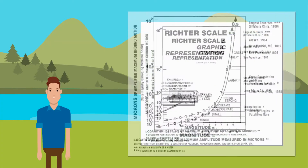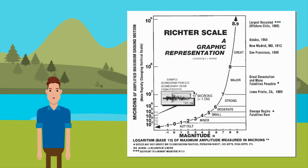The effect of an earthquake can be measured on the Richter or Mercalli scales. The Richter scale measures the strength on a scale of one to ten — an earthquake measuring seven on the Richter scale is 100 times stronger than one measuring five. The Mercalli scale measures the physical effects of an earthquake on a scale of one to twelve.